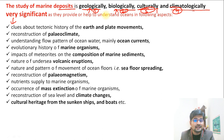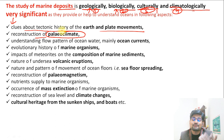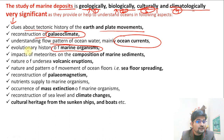Ocean deposits give us clues about the tectonic history of Earth and plate movements. They help in the reconstruction of paleoclimate — the ancient climate — in the geological timescale. They also help us understand the flow pattern of ocean water mainly through ocean currents, the evolutionary history of marine organisms, and the impacts of meteorites through the historical time period.